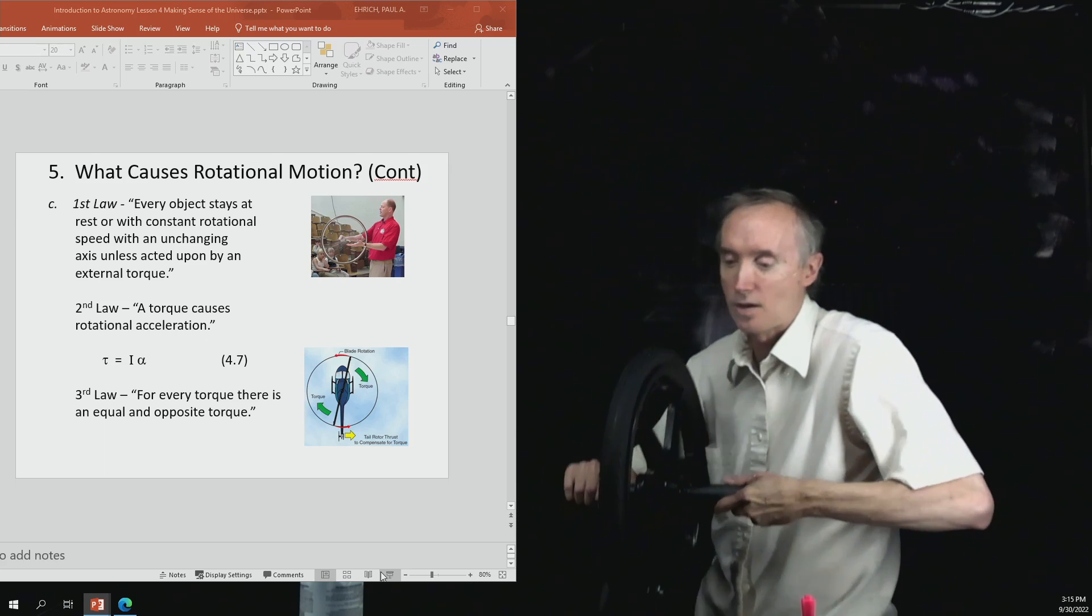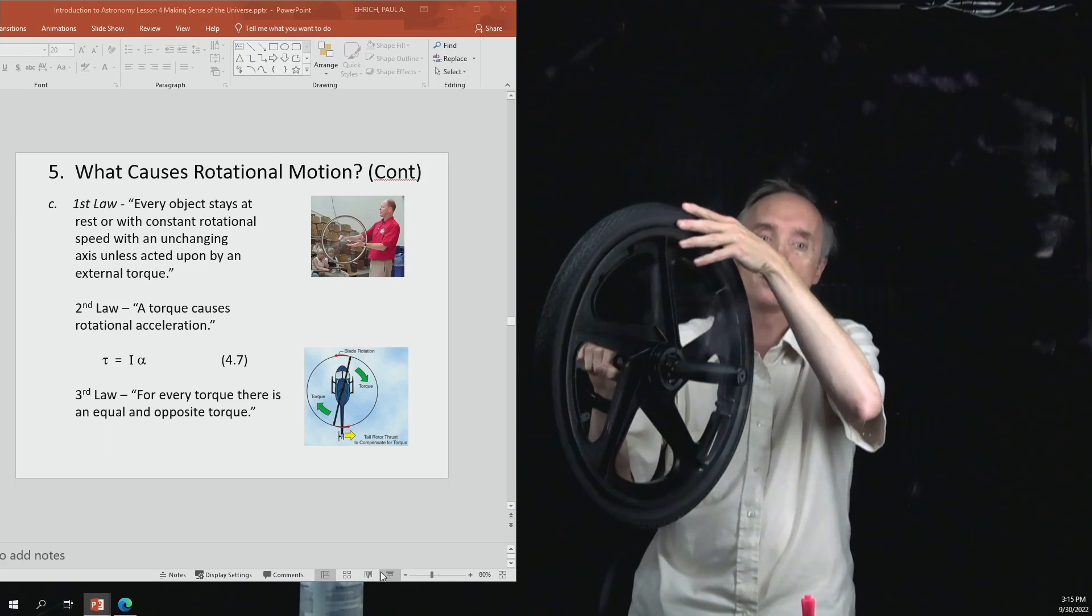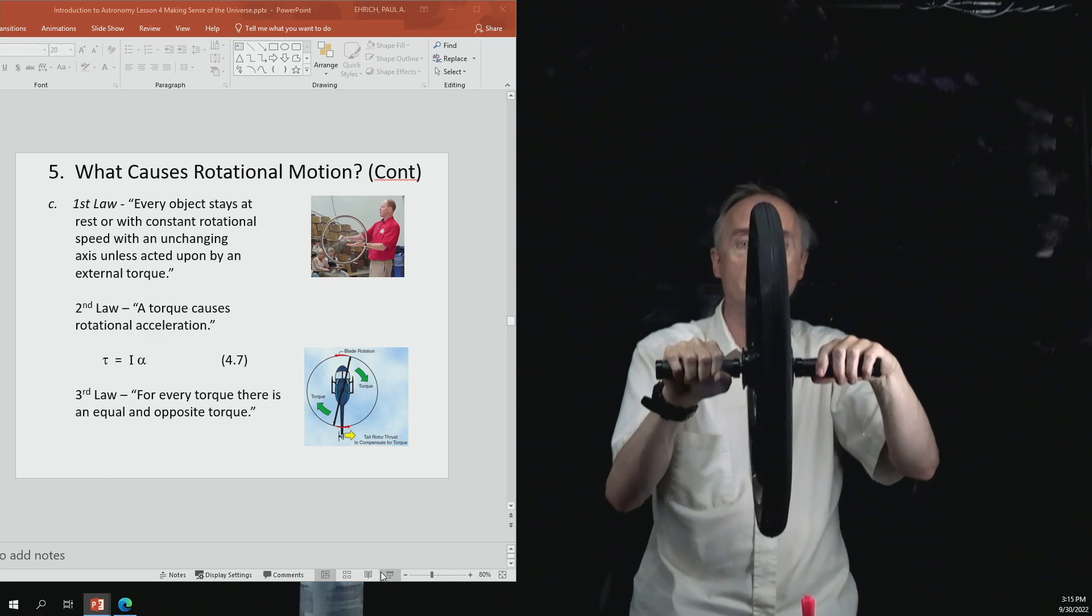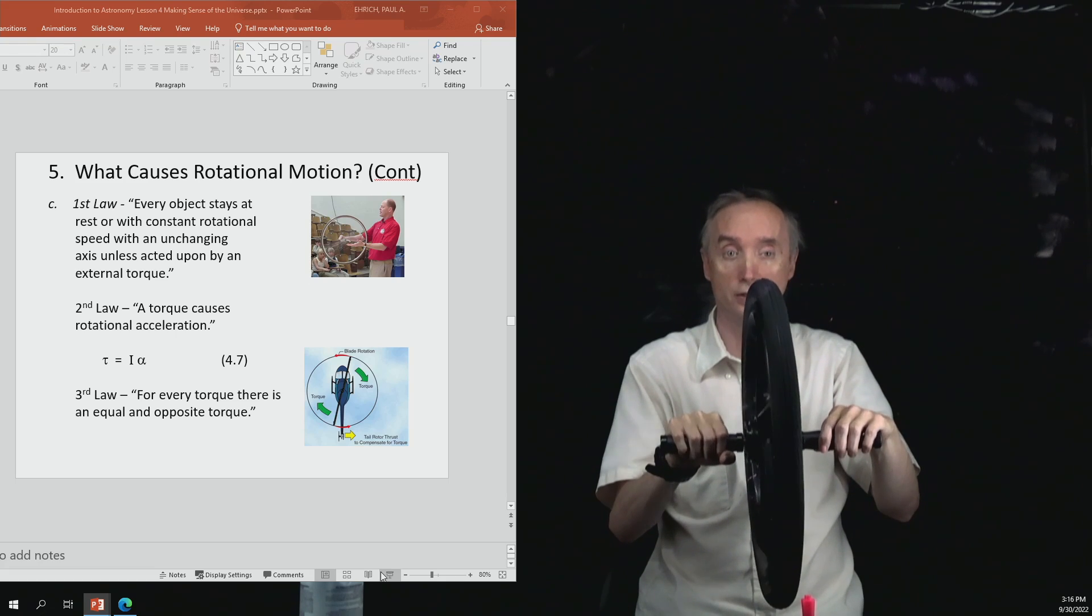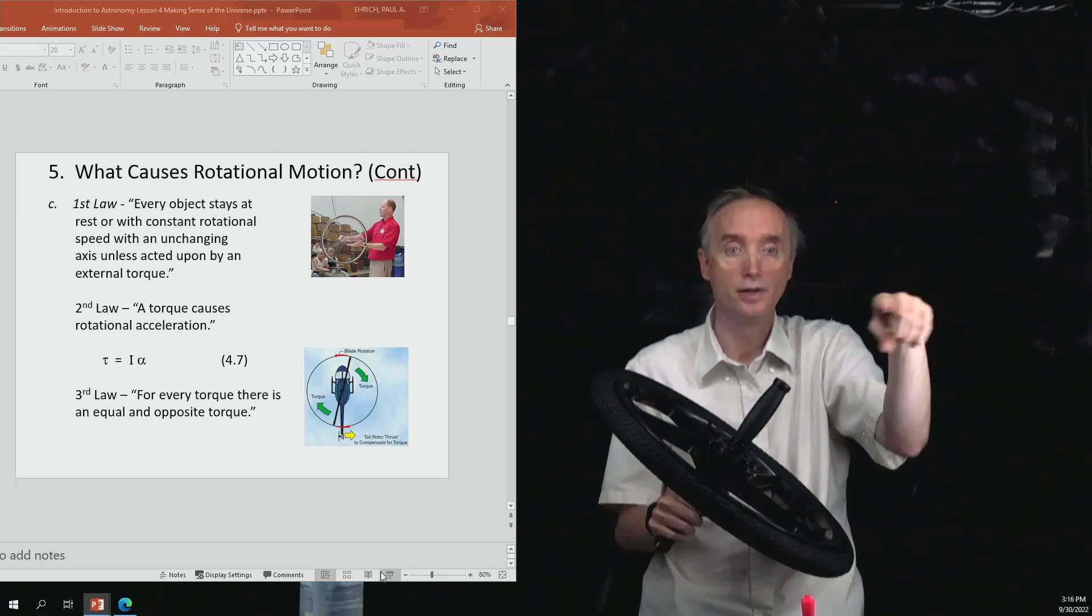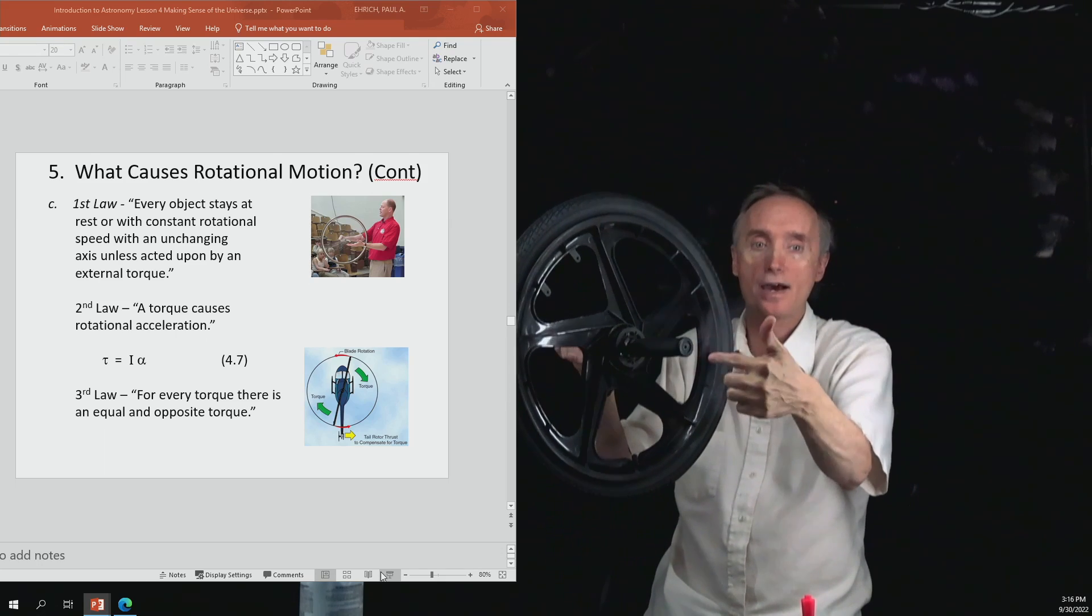So here's our wheel, and I can spin the wheel. So there's the rotational speed. Now what would be the equivalent to the direction that something moves in a straight line? Well, that would be the axis. So you see this wheel has an axis.